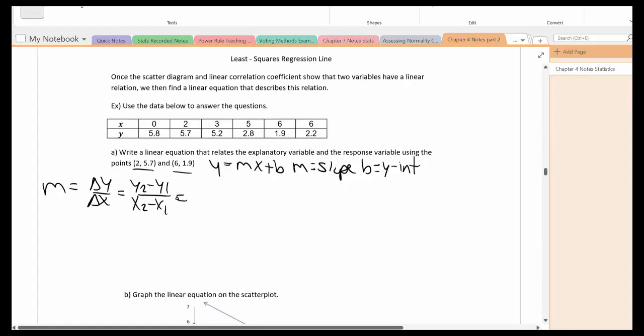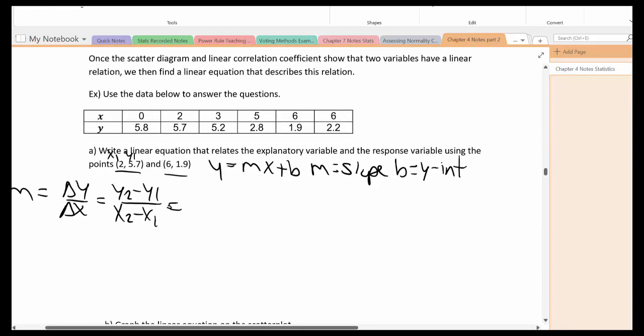So as ordered pairs I can write this as x1 y1 and x2 y2. Use the formula that's 1.9 minus 5.7 divided by 6 minus 2. That gets us this over this which equals negative 0.95.